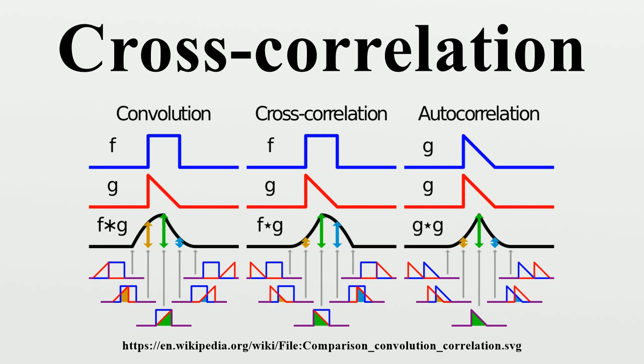This is because when peaks are aligned, they make a large contribution to the integral. Similarly, when troughs align, they also make a positive contribution to the integral because the product of two negative numbers is positive. With complex valued functions, taking the conjugate ensures that aligned peaks with imaginary components will contribute positively to the integral.